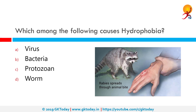Which among the following causes hydrophobia? The correct answer is virus. Most commonly it is caused by the rabies virus in the encephalitic stage, which means when it affects the brain and causes swelling and inflammation of multiple areas of the brain. Hence it affects the complex areas in the brain needed for swallowing.